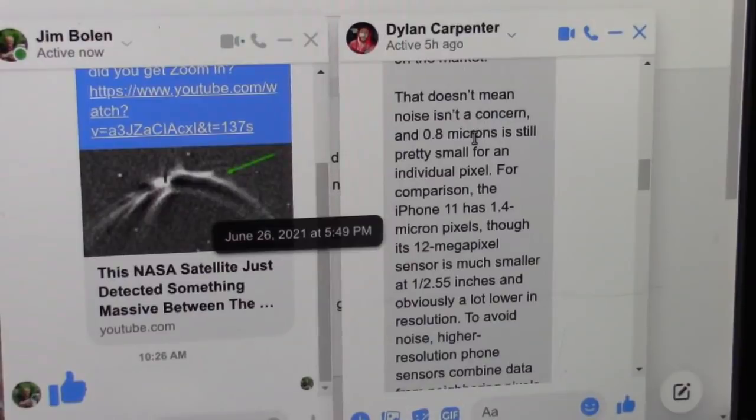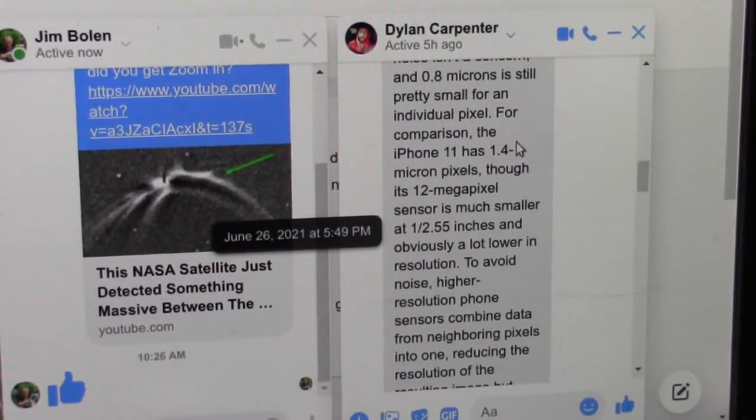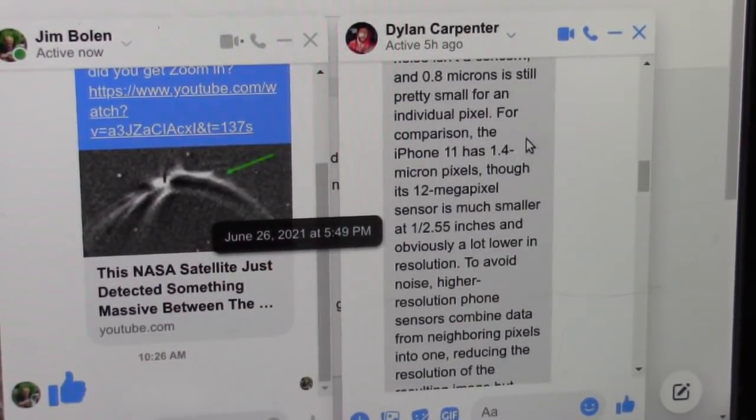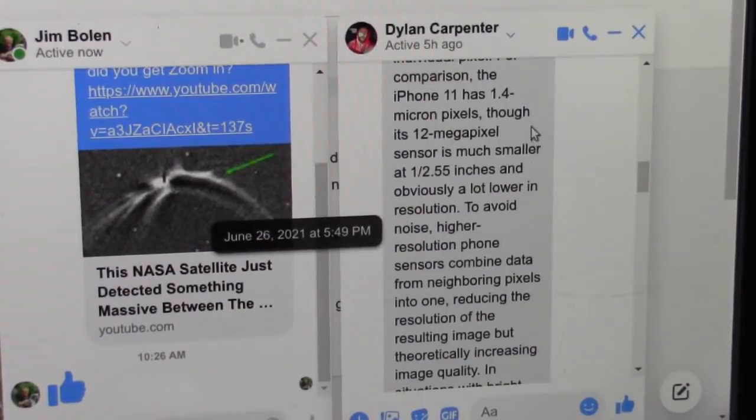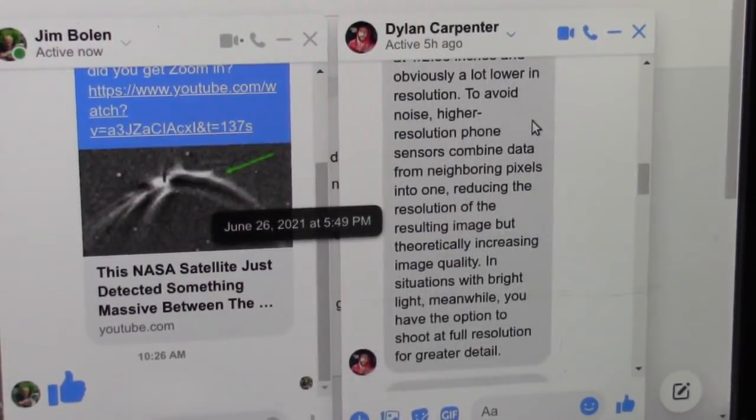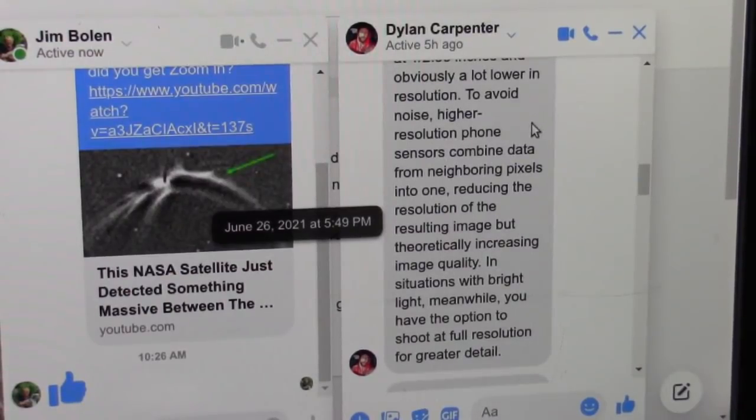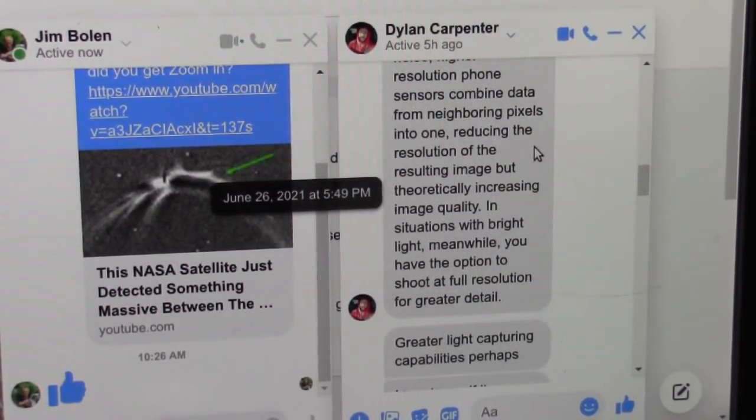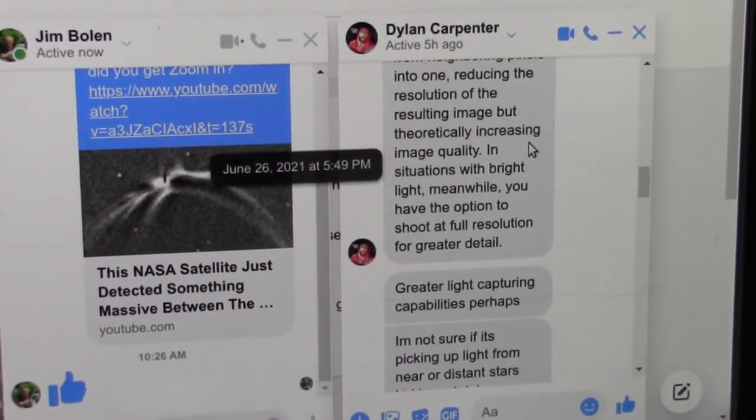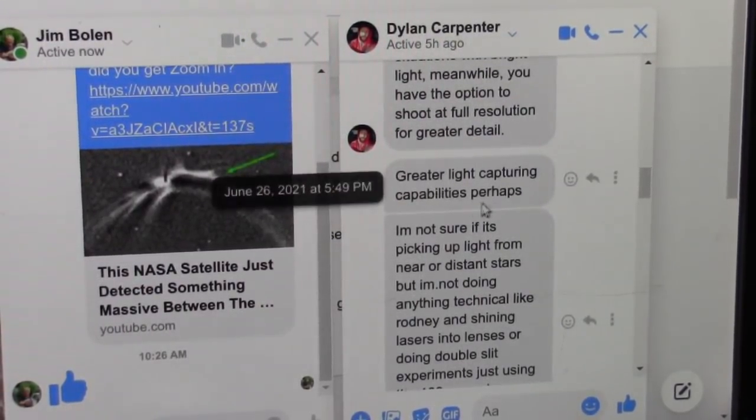Now, that doesn't mean noise isn't a concern. The 0.8 microns is still pretty small for an individual pixel. For comparison, the iPhone 11 has 1.4 microns, so that's quite a bit larger. Though its 12 megapixel sensor is much smaller at 1 and 2.55 inches, obviously a lot lower in resolution. To avoid noise, higher-resolution phone sensors combine data from neighboring pixels into one, reducing the resolution of the resulting image, but theoretically increasing image quality in situations with bright light. Meanwhile, you have the option to shoot at full resolution for greater detail. Greater light capturing capabilities, perhaps.